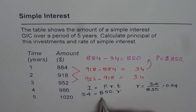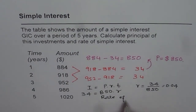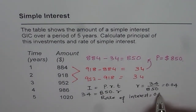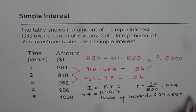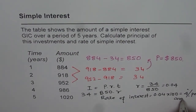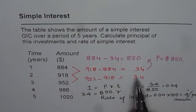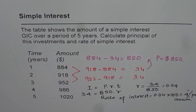Therefore, the rate of interest is 0.04 times 100, which equals 4% per annum. So that is how we find the rate of interest. This constant first difference is the product of the principal and the rate of interest, so dividing the first difference by the principal gives us the rate of interest.